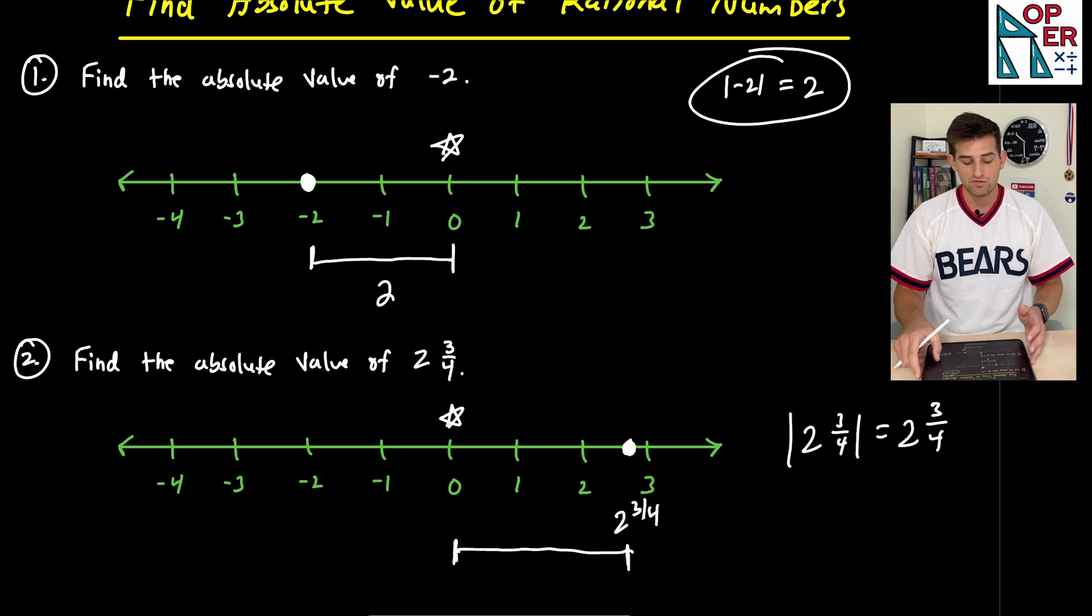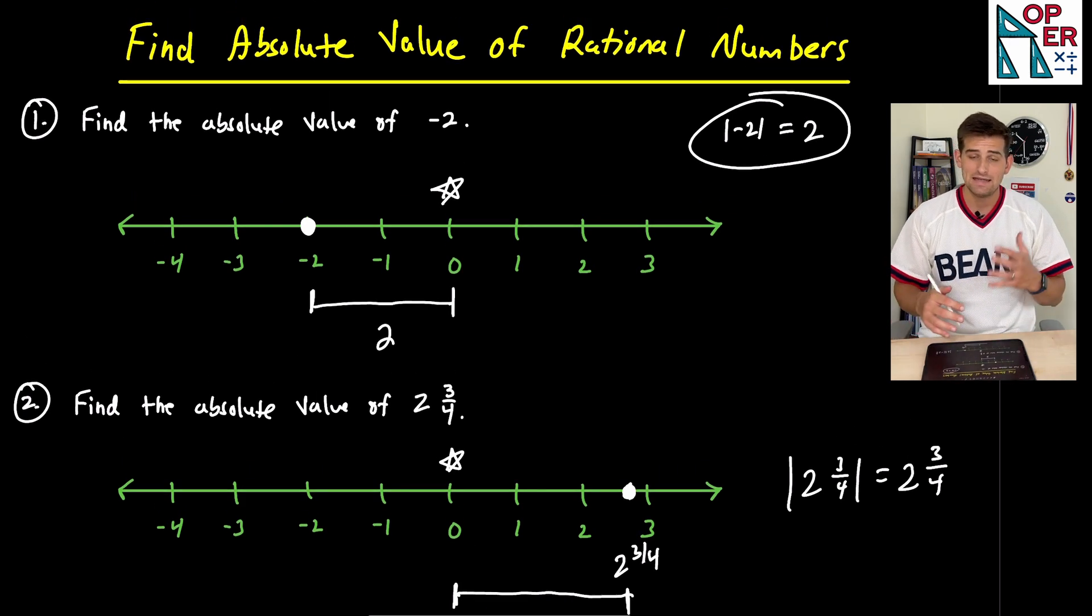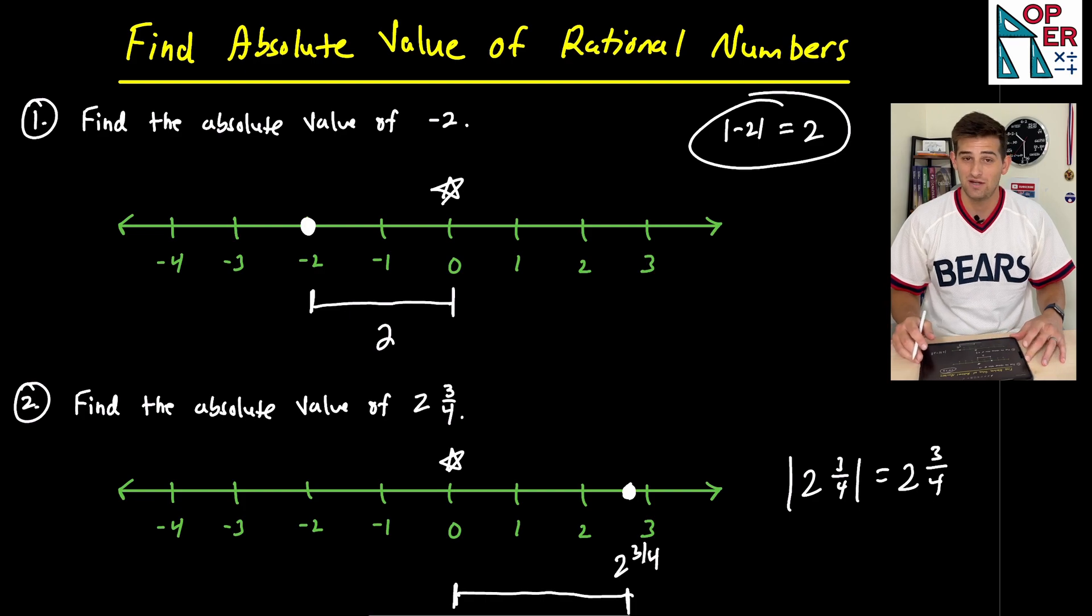So just remember absolute value, the distance from zero, and that distance needs to be positive. And that's how you can find absolute value of a rational number.